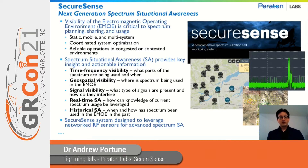When we talk about spectrum situational awareness, we're talking about five key areas. The first is time-frequency visibility, which considers what parts of the spectrum are being used and when. The second area is geospatial visibility, which looks at where in the world the spectrum is being used. The third is signal visibility, which considers what types of signals are present and whether or not they're interfering with other things that need to be going on.